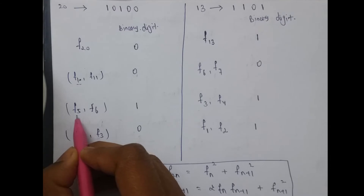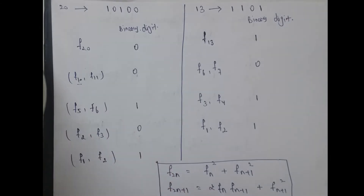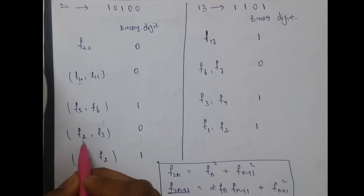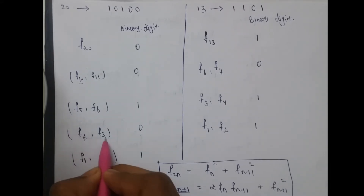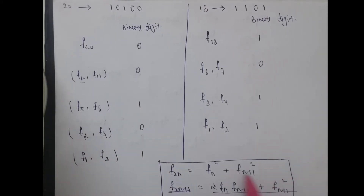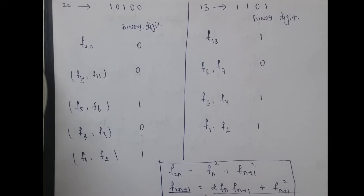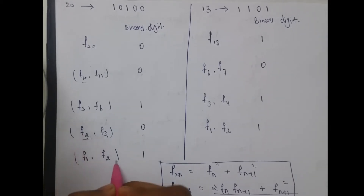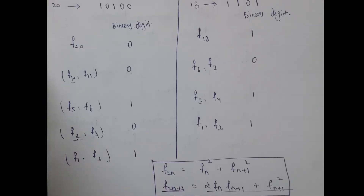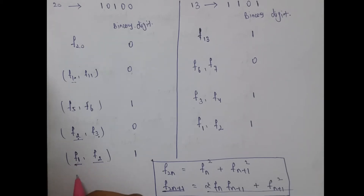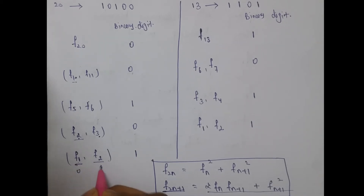For calculating f(5), this is the f(2n+1) part, so f(2n+1) is 5, meaning our n is 2 and f(n+1) is f(3) from this formula. And for calculating f(2) we need f(1) and f(2). By the definition of the Fibonacci series we know f(1) is 0 and f(2) is 1.